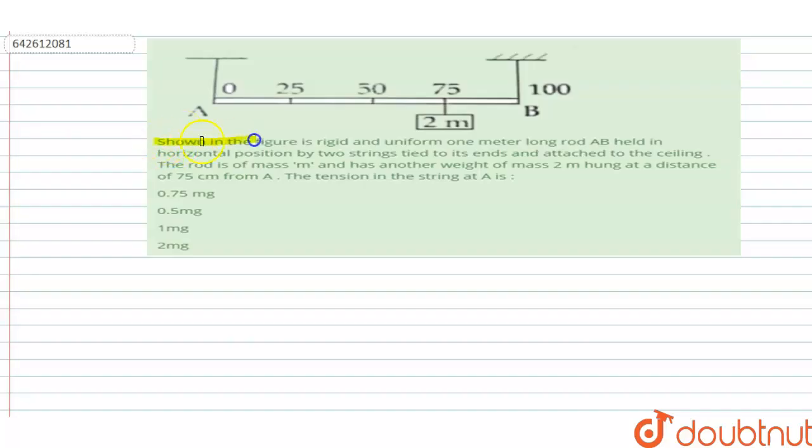Welcome to Doubtnet. In this question, shown in the figure is a rigid and uniform 1 meter long rod AB held in horizontal position by two strings.